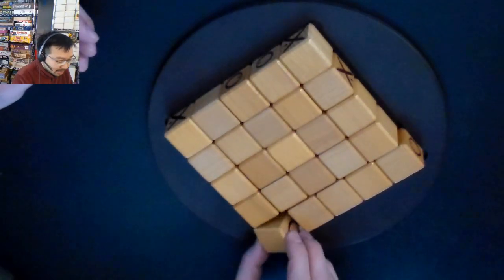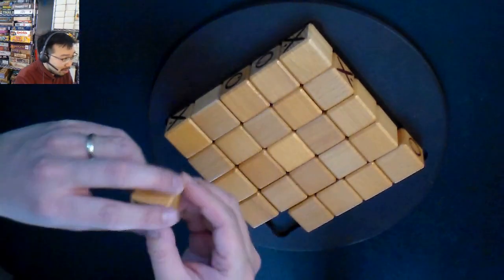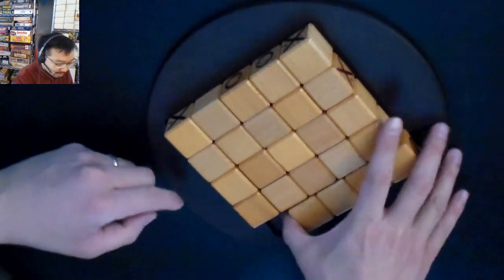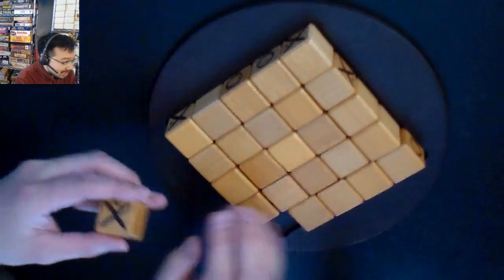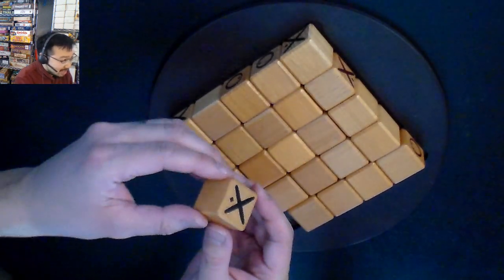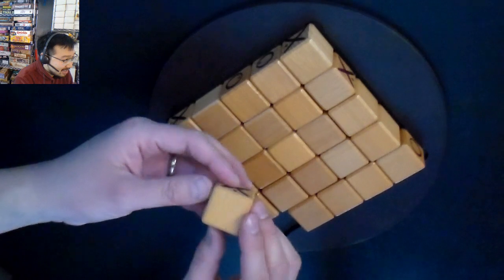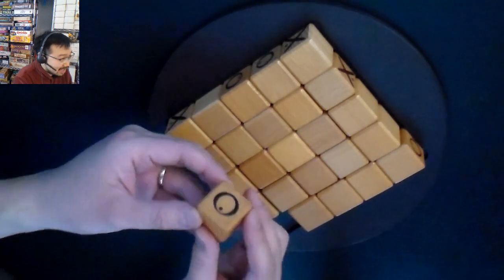Quixo is a game that is played with 25 wooden cubes on a circular board with an inlaid square and basically all the cubes sit in here. Each cube consists of six sides, there's four blank sides, and an X and an O.